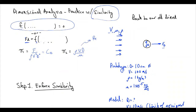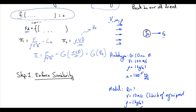We have our two pi groups. Buckingham Pi Theorem tells us that pi 1, which equals F over rho V squared D squared, is equal to some unknown function of pi 2, which is rho V D over mu — equivalently, some unknown function of the Reynolds number. Sometimes we're given a nice plot of this function, and sometimes we're not. Let's assume we don't have those plots.